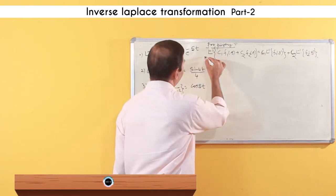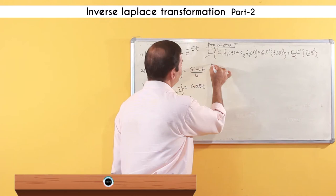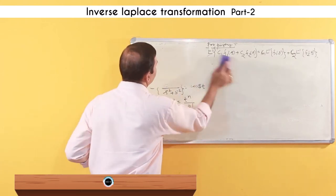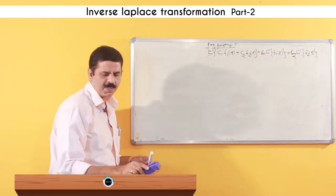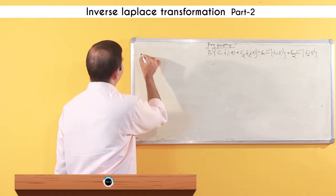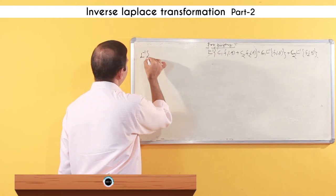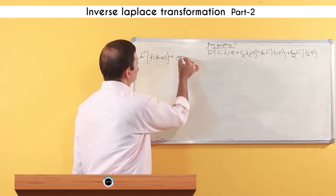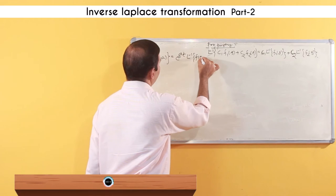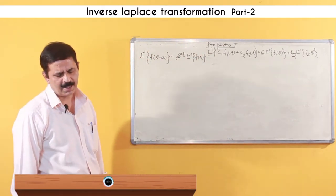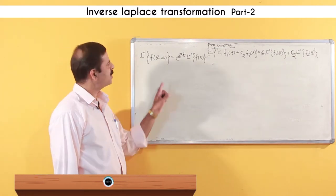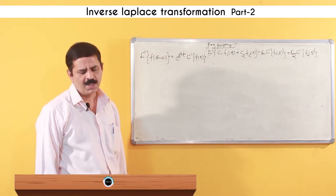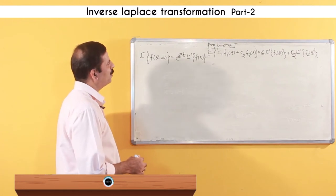Using that, we will solve problems later. But before that, a small theorem: the statement of the theorem says that the Laplace inverse of F(s − a) is equal to e to the power at times the Laplace inverse of F(s). That is, L⁻¹{F(s−a)} = e^(at) · L⁻¹{F(s)}. This also has a corresponding proof.